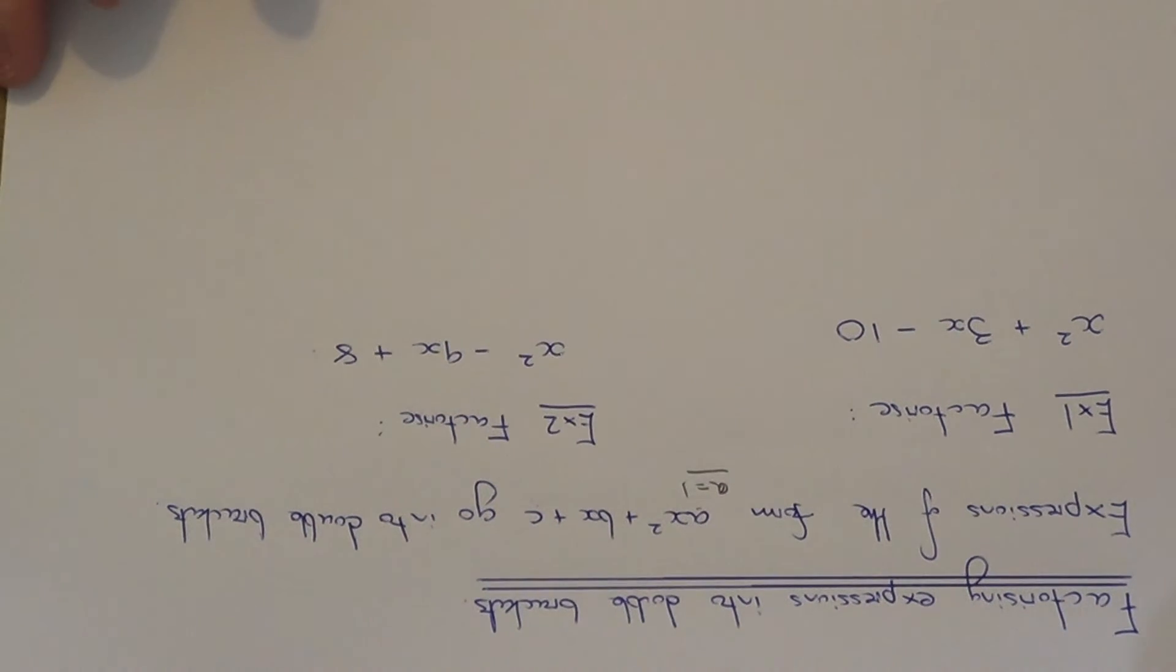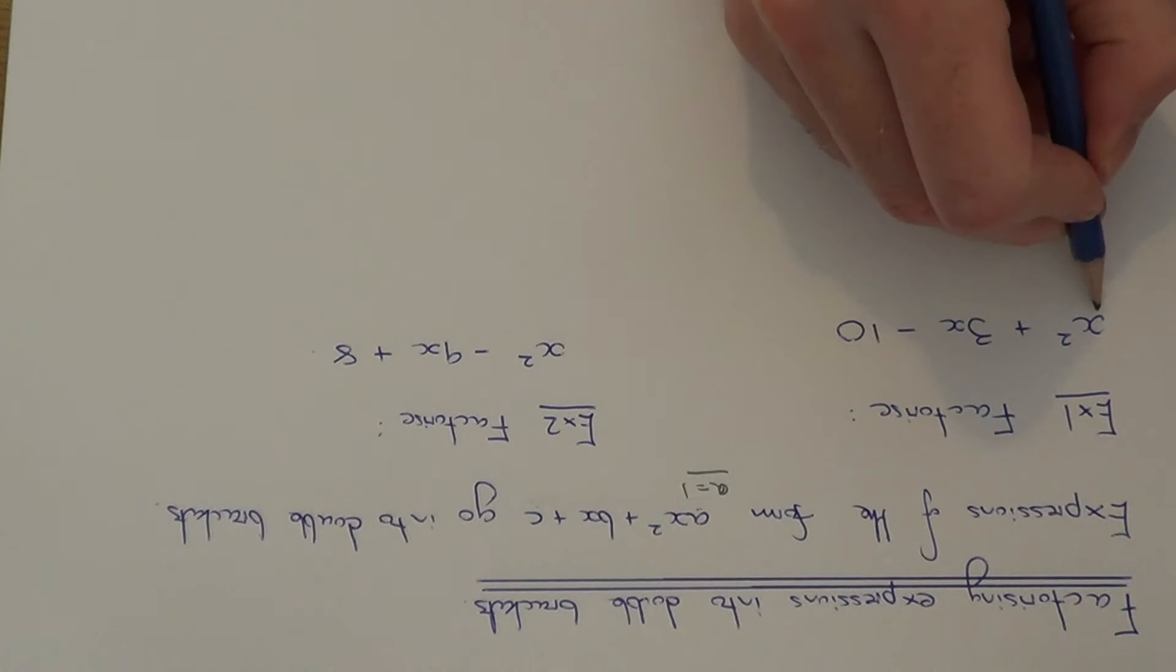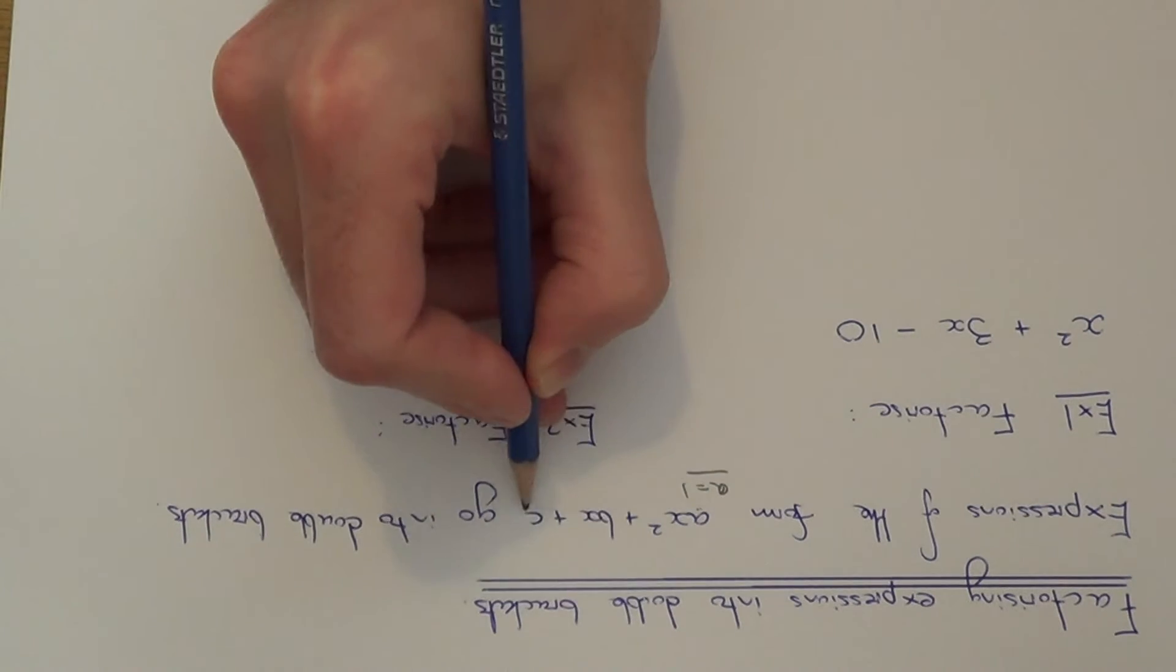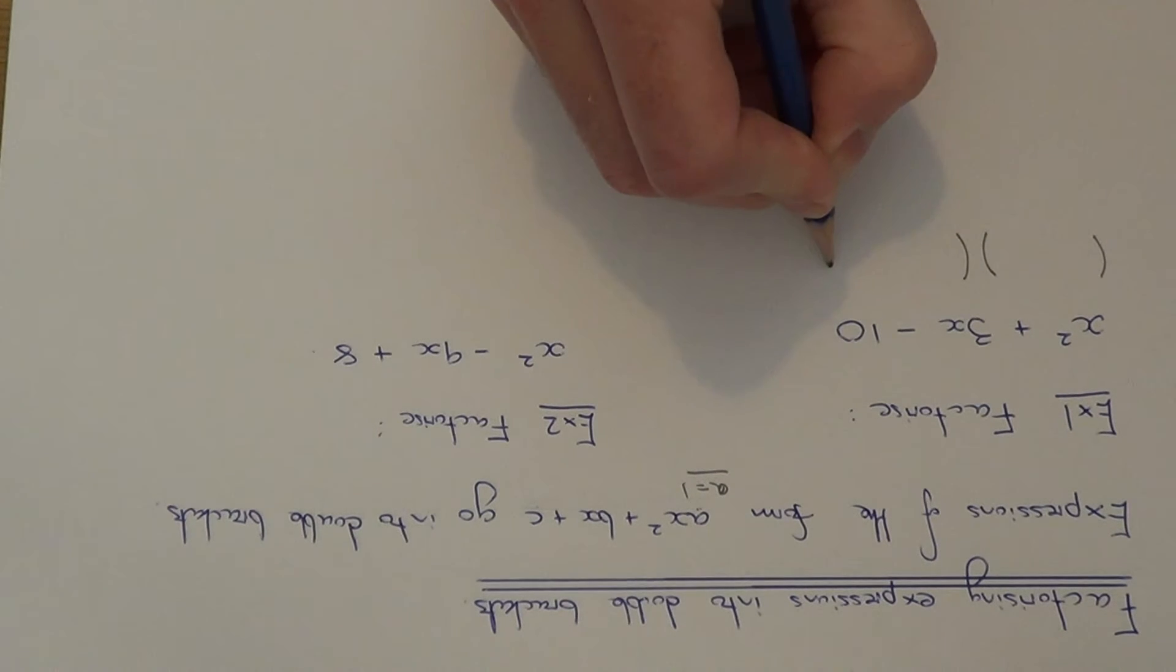So these type of quadratic expressions are the easiest type to put into double brackets. So let's look at example 1 then. So we need to factorize X squared plus 3X minus 10. So since it takes this form up here, we know it's going to go into double brackets.